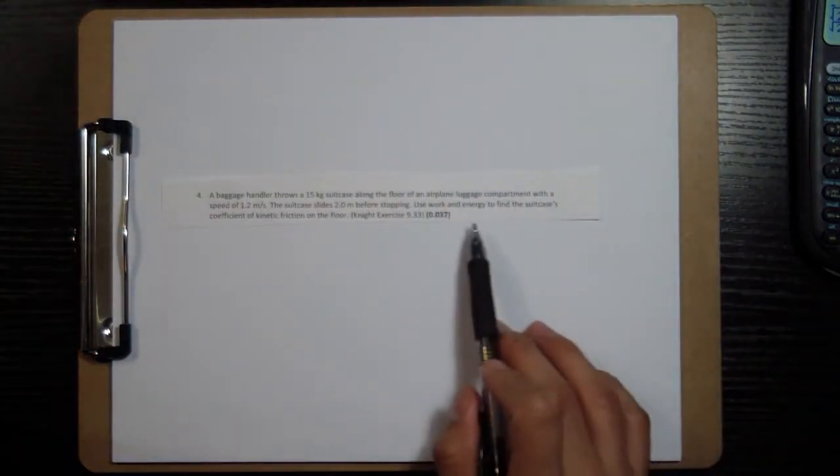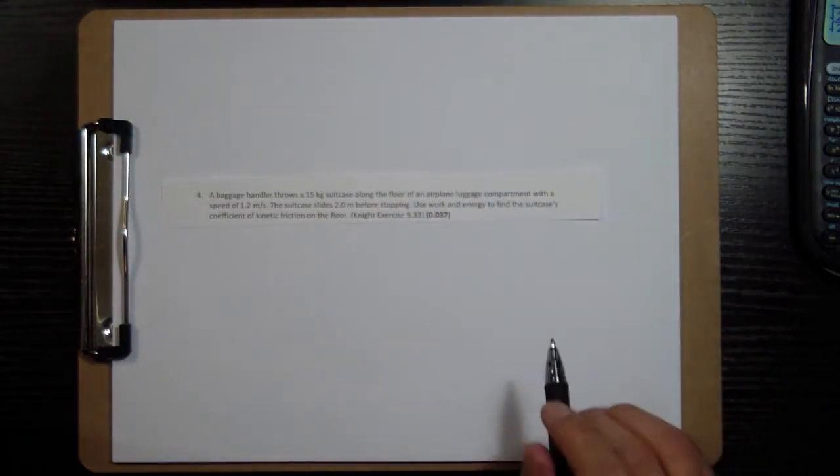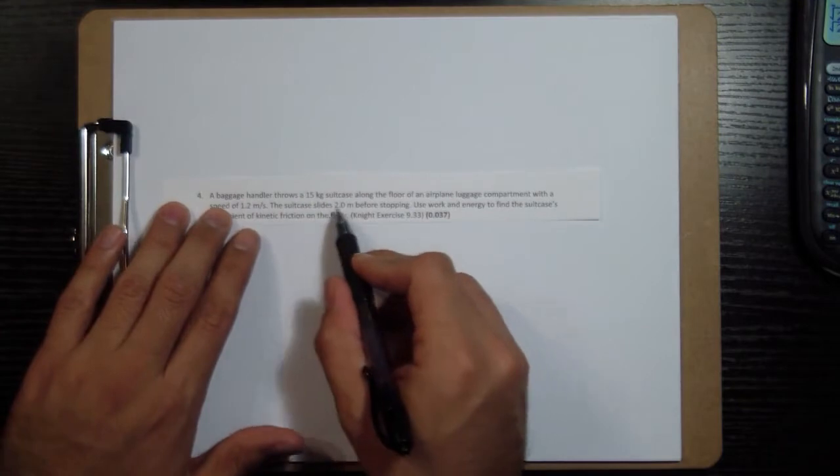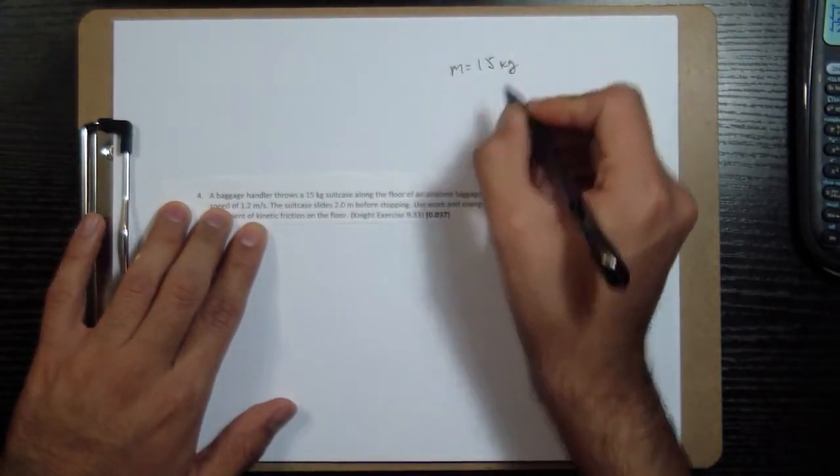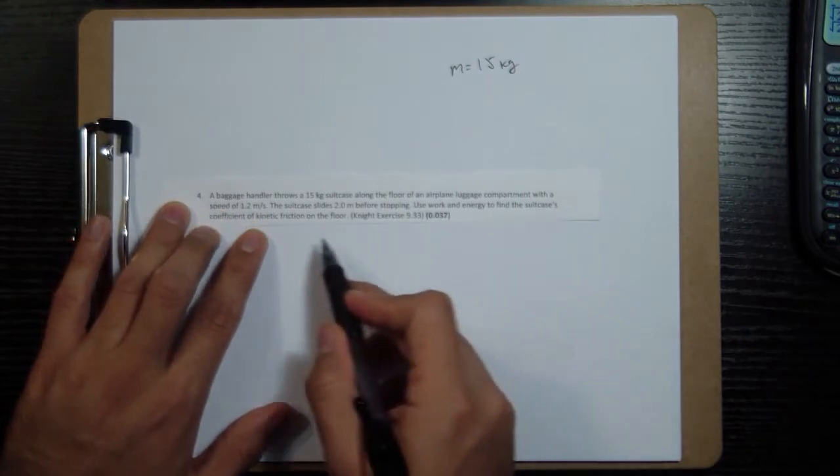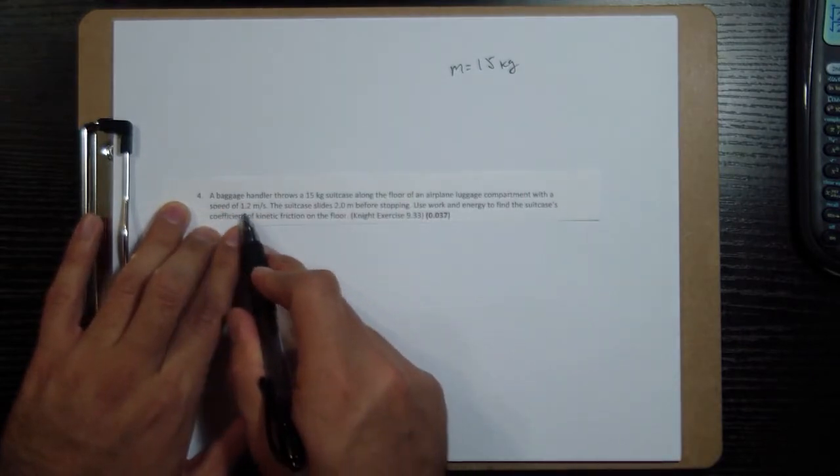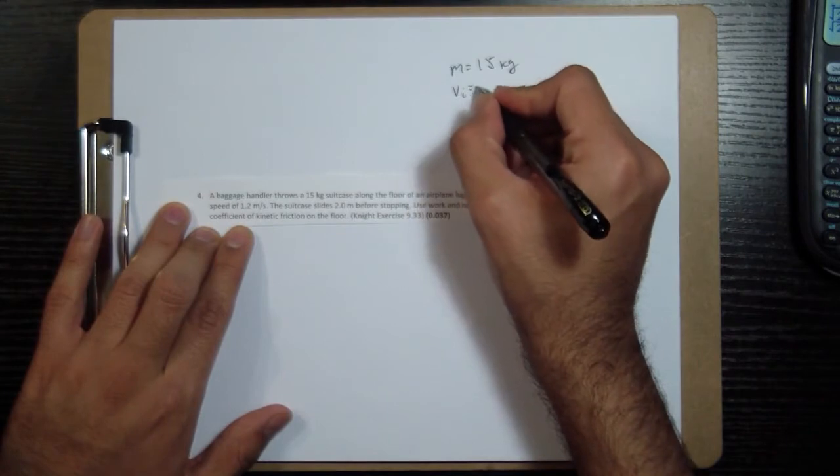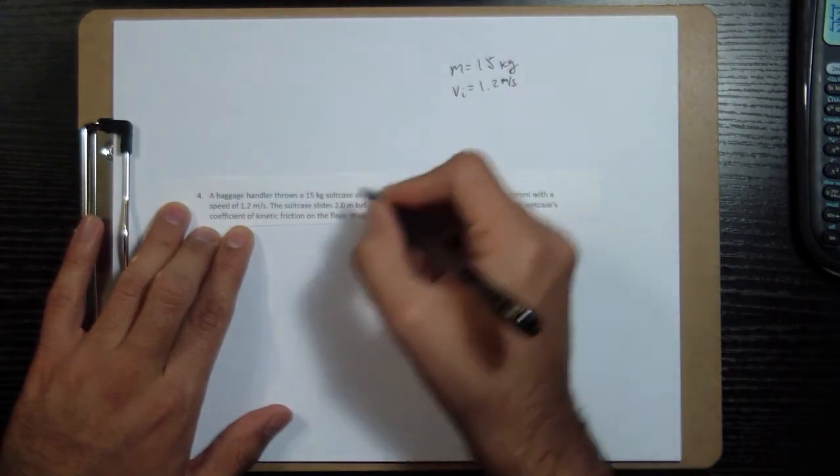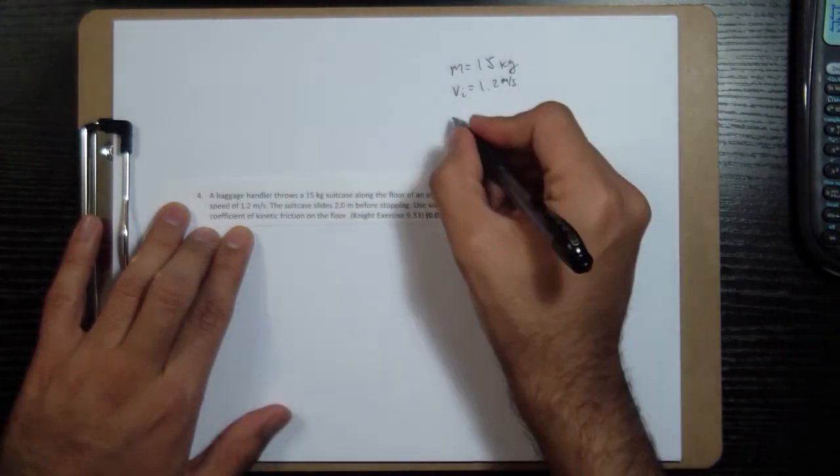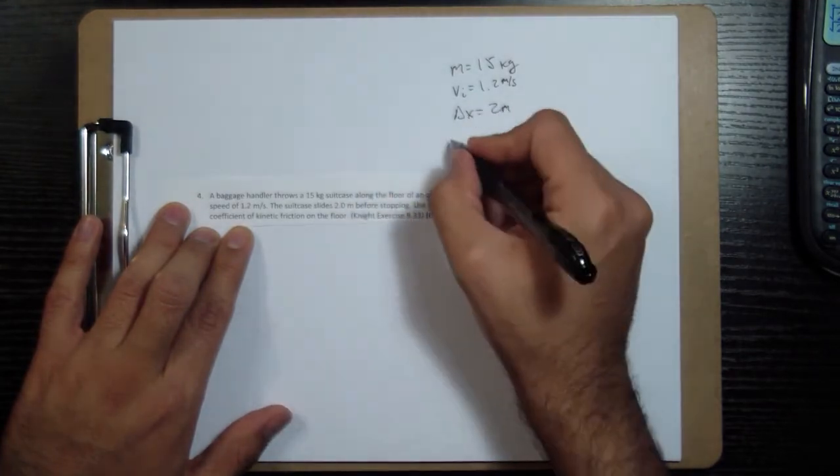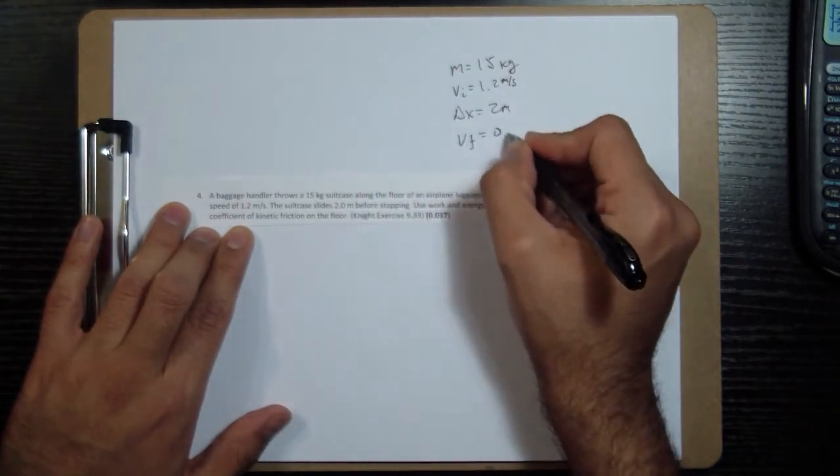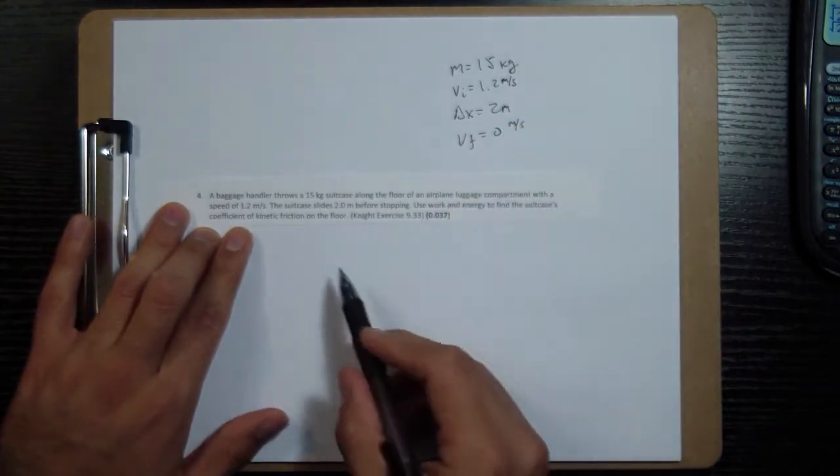So we're trying to find this coefficient of kinetic friction, and we're given that we have the mass of the bag, 15 kilograms. We know that it's going at a speed of 1.2 meters per second initially. And it slides two meters before stopping. Delta X, two meters. And because it's going to stop, our final velocity is zero meters per second.